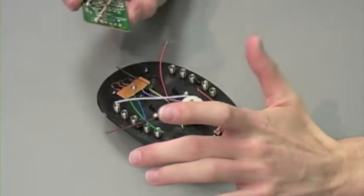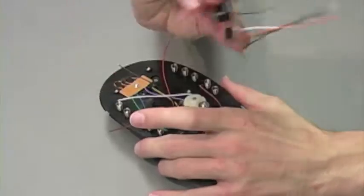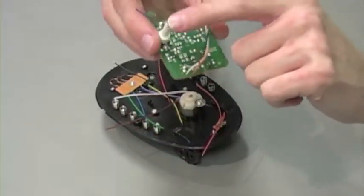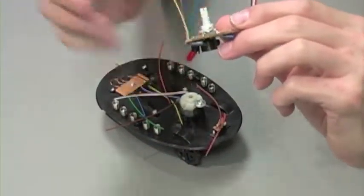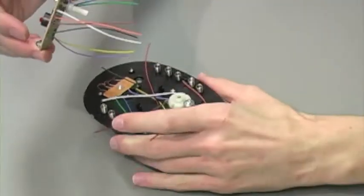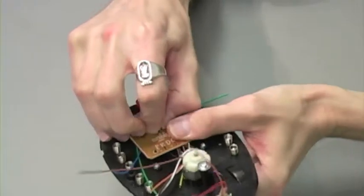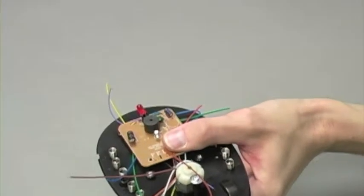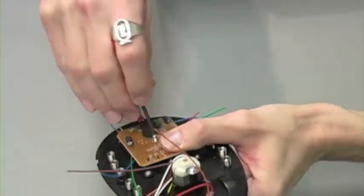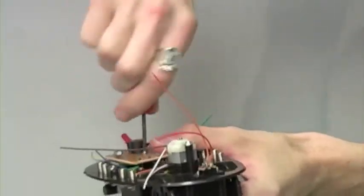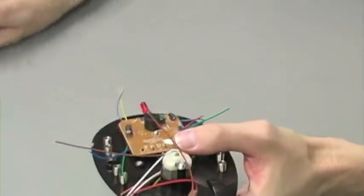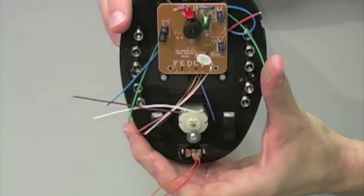For step three, we're going to attach our board with this side and this part threaded into this hole. Attach with one of the smaller screws. Step three complete.